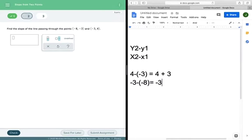Let's simplify this. Top: 4 plus 3 is 7. On the bottom, -3 plus 8 is the same thing as saying 8 minus 3, so that would be 5. And so my answer is going to be positive because neither one of these is negative, and it's going to be positive 7/5.